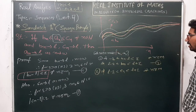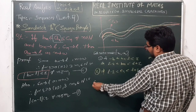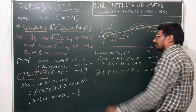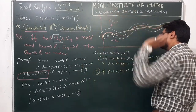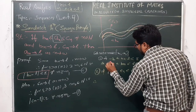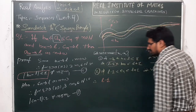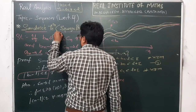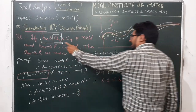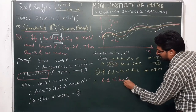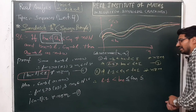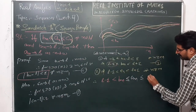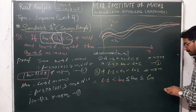M is the maximum of m1 and m2. Now look — using the first inequality further: